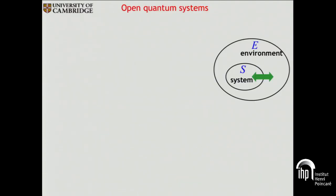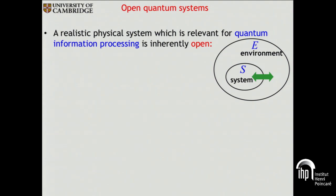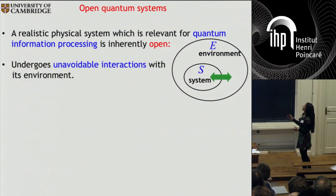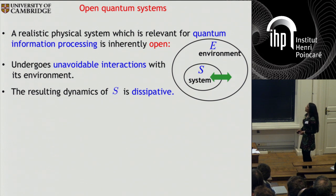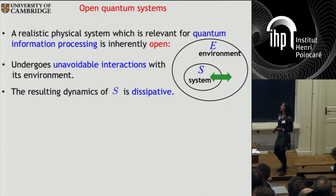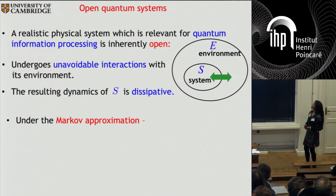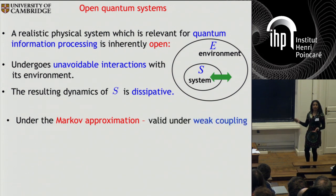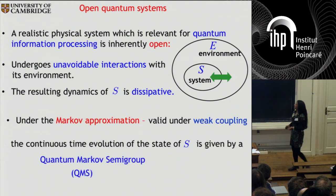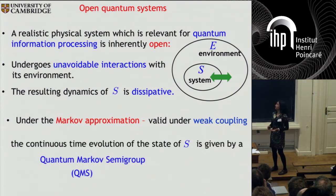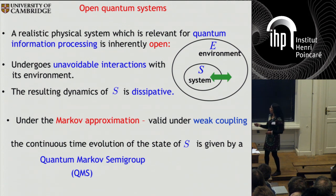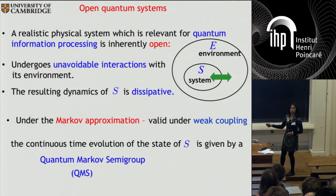Let's start with open quantum systems. All of you know that a realistic physical system which is relevant for quantum information processing is inherently open. It undergoes unavoidable interactions with its environment and consequently the resulting dynamics of the system is dissipative. Under the Markov approximation, which is valid when the system is weakly coupled to the environment, the continuous time evolution of the state of the system is given by what is called a quantum Markov semigroup, for which I will use the acronym QMS throughout this talk.